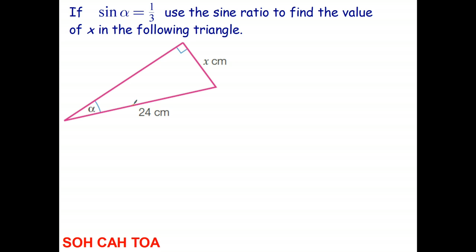In this video we're going to do it the other way around. In this video I know the value, for example, of the sine of an angle and I'm going to use that to find an unknown length. So here I have a right-angled triangle.